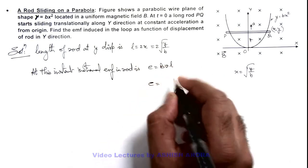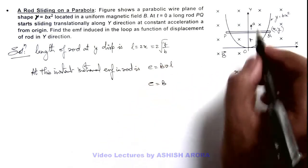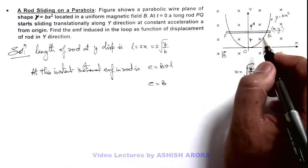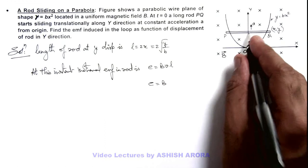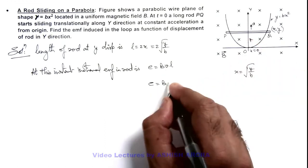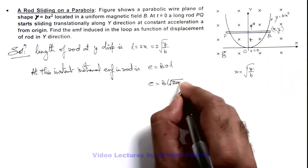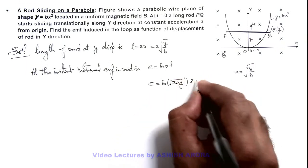On substituting the value it is B, and if it is moving at constant acceleration ay with initial speed zero at origin, after displacement y its speed can be given as root 2ay y. And the length we are having is twice of root of y by b.